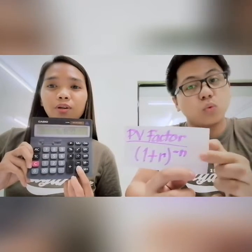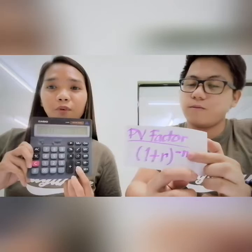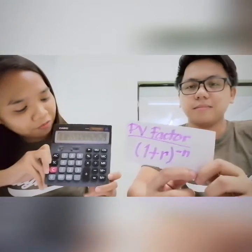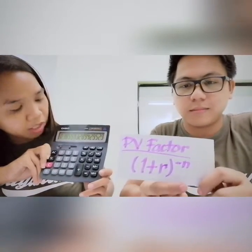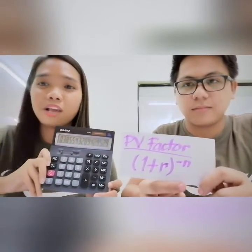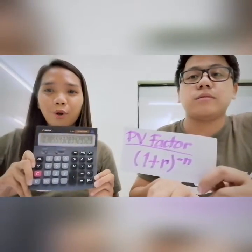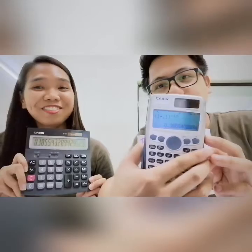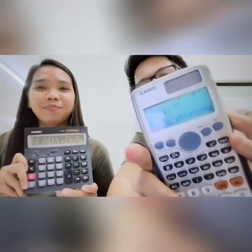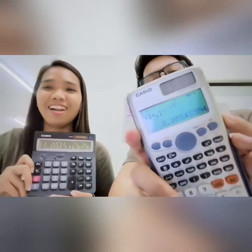Press the equal sign 10 times: 1, 2, 3, 4, 5, 6, 7, 8, 9, 10. So your present value factor of 10% for 10 years is 0.3855.